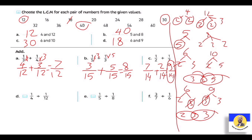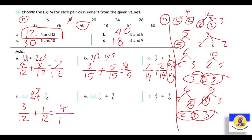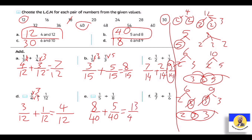The next: 1 over 4 plus 1 over 12. الـ 4 with 12 - الـ LCM هي 12. نكتب 12 هنا وهنا. الـ four بقت 12: عملنا × 3، يبقى 1 × 3 = three. الـ twelve at the same. نعمل addition: 3 + 1 = four over 12. The next: 1 over 5 plus 1 over 8. الـ 5 والـ 8 - الـ LCM هي 40. الـ five بقت 40: عملنا × 8، يبقى 1 × 8 = eight. والـ eight بقت 40: عملنا × 5، يبقى 1 × 5 = five. So the answer is 13 over 40.